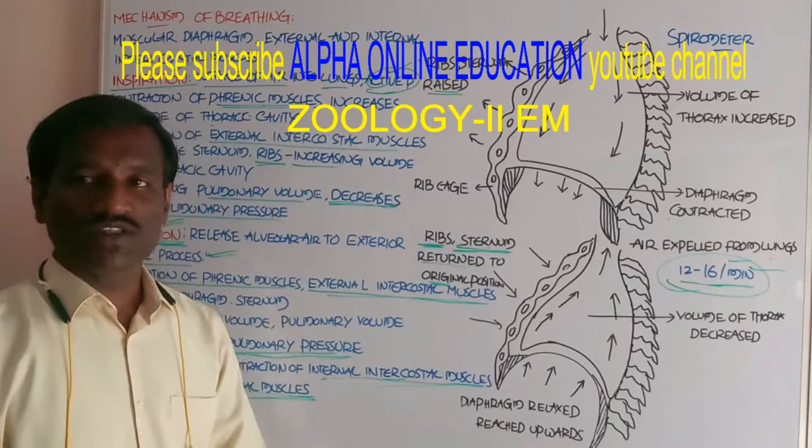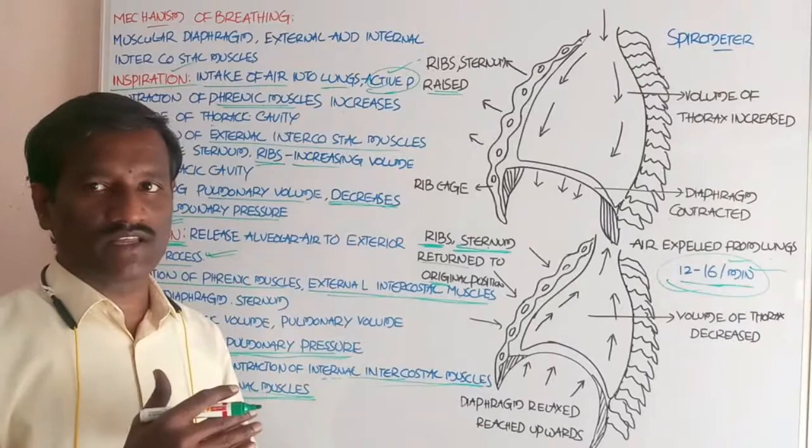The volume of air at the time of breathing can be estimated and determined by a device called a spirometer.